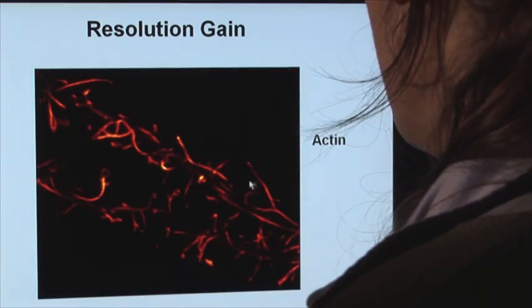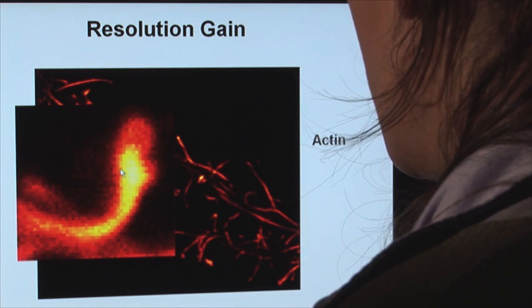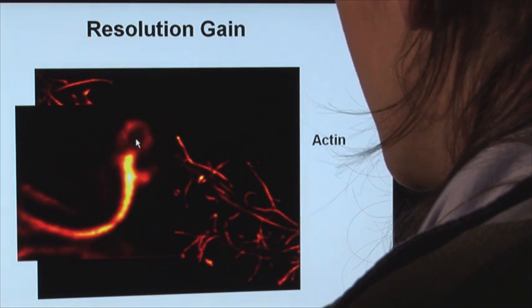This slide demonstrates the gain in spatial resolution. Here, you can see actin in a dendritic spine. While the confocal recording looks quite blurred, the RESOLFT image reveals substructure in the spine head.